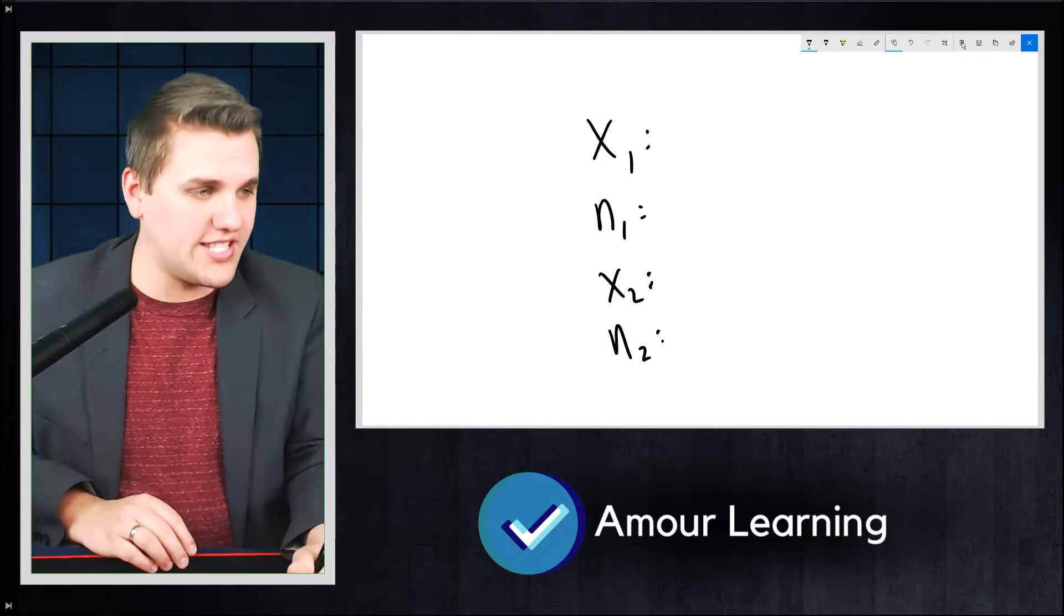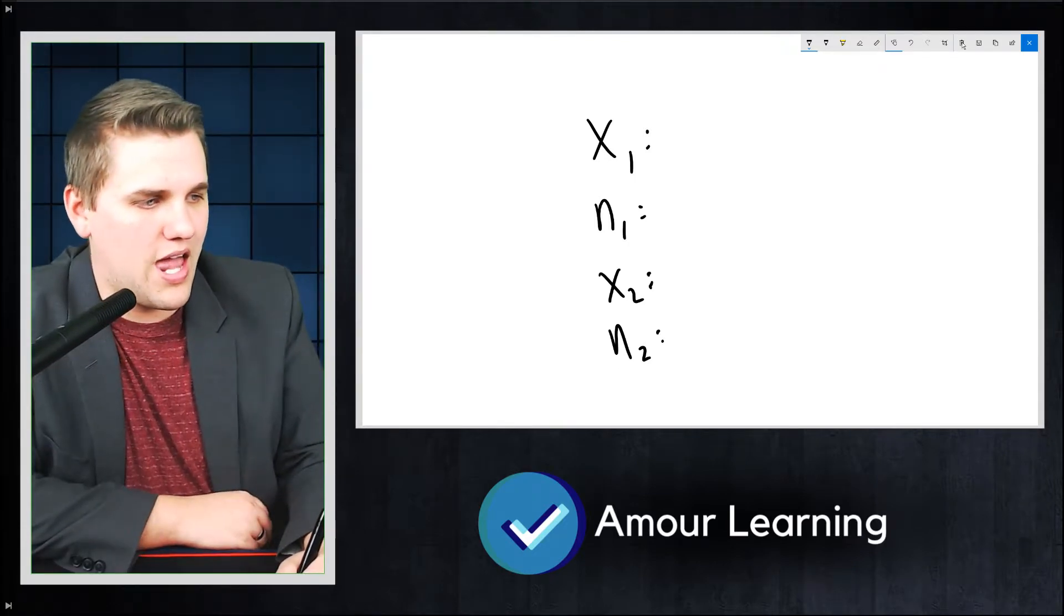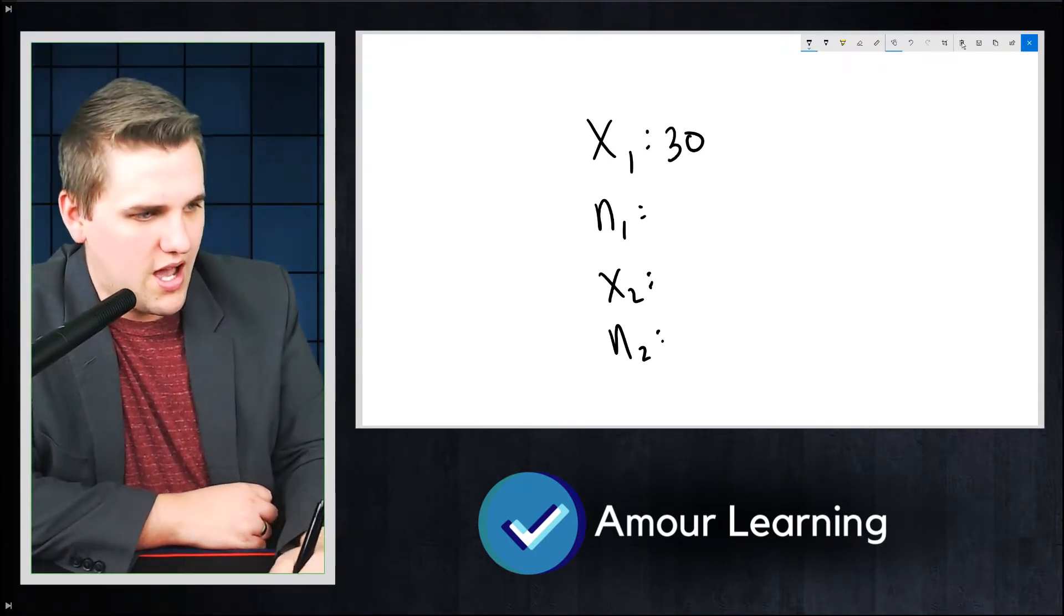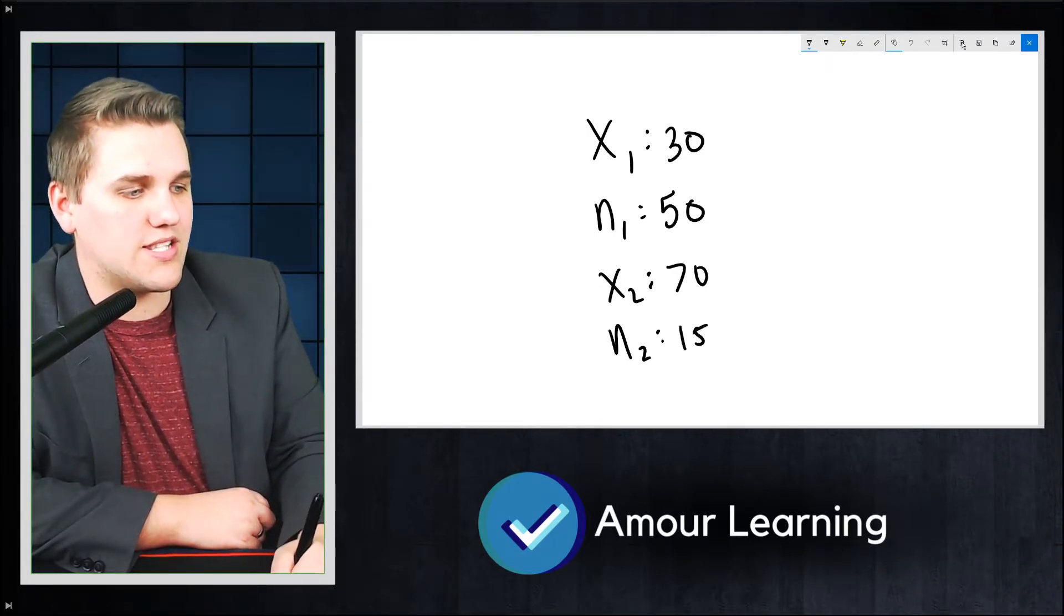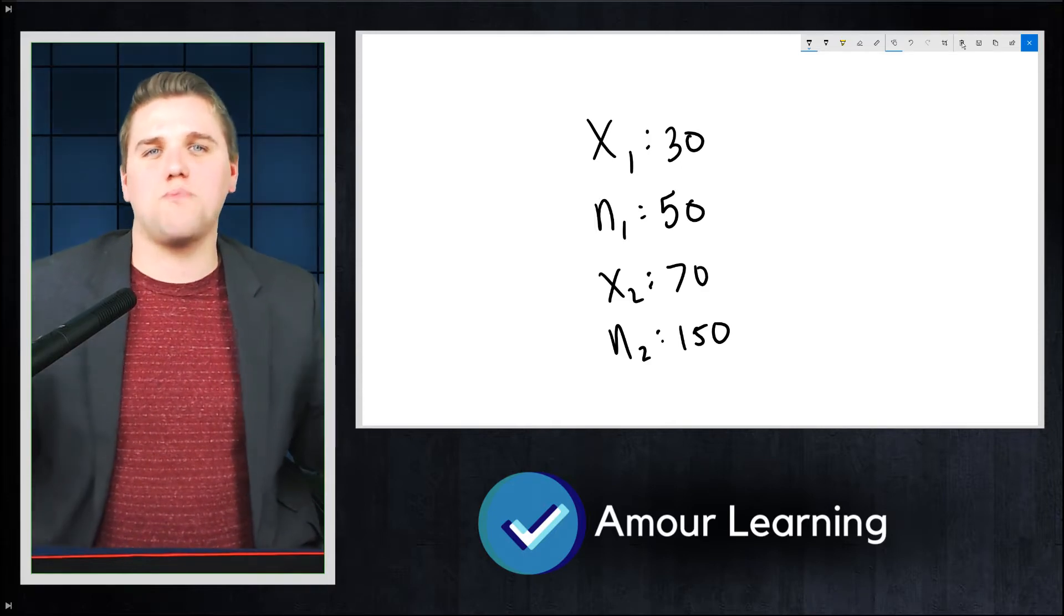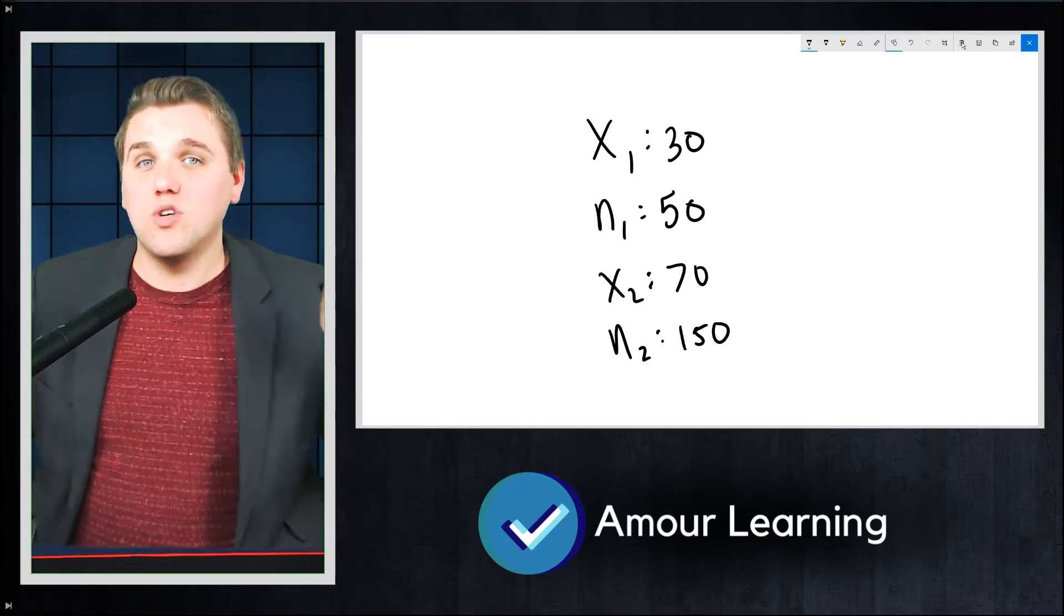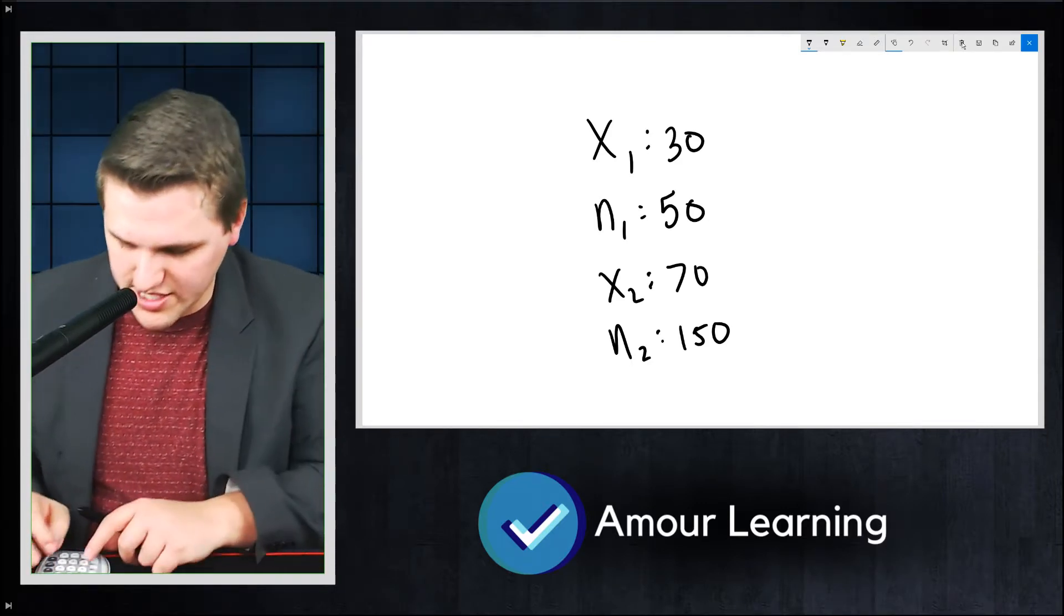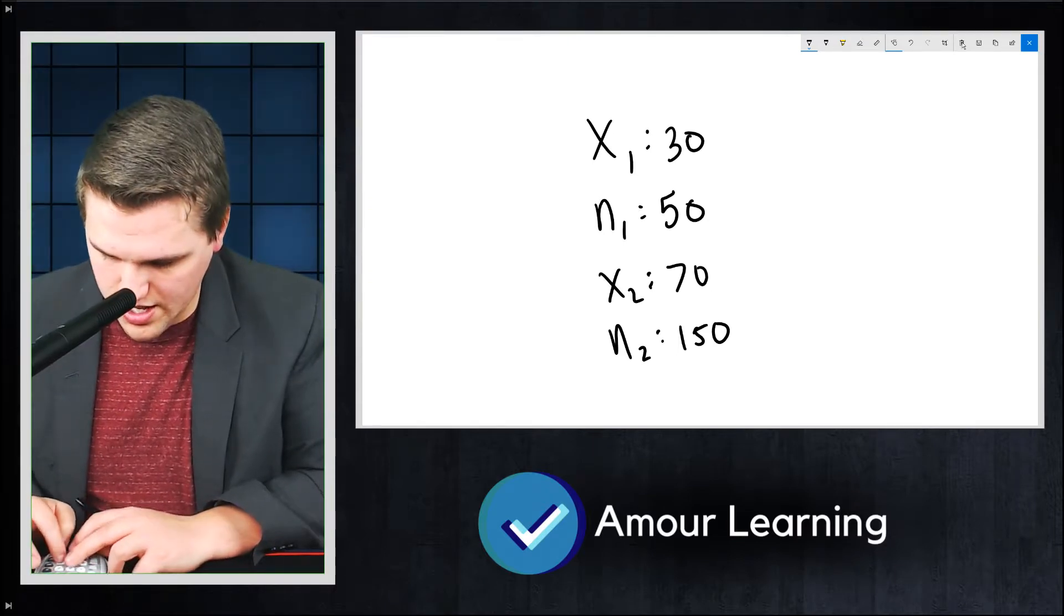So let's say I have two samples. For the first one, there were 30 Republicans out of the 50 people I sampled, and the other one, there were 70 Republicans out of the 150 that I sampled. I want to see, are those two polls statistically significant from each other? Do they show different results? So I'm going to type in 30, 50, 70, and 150.